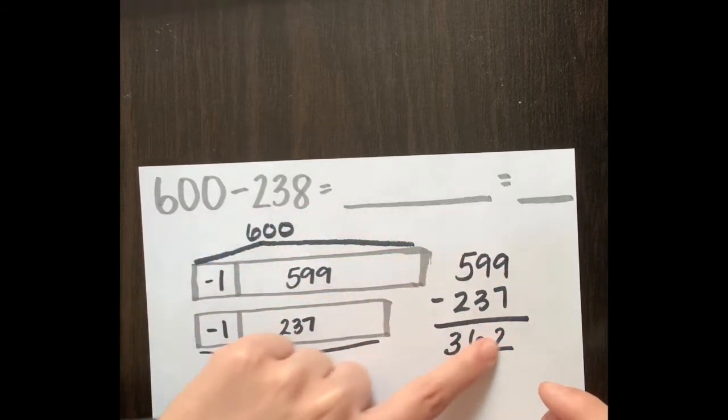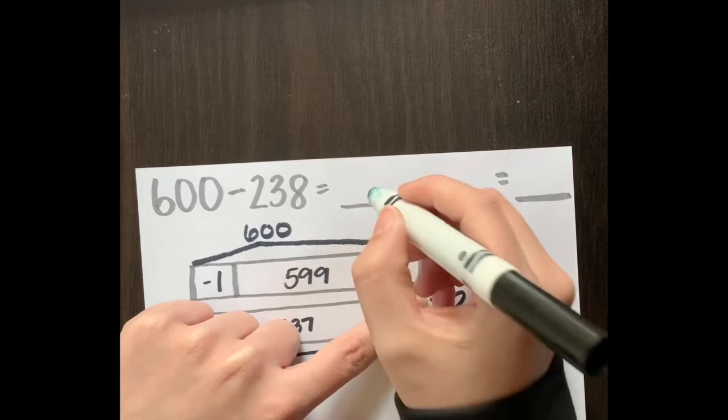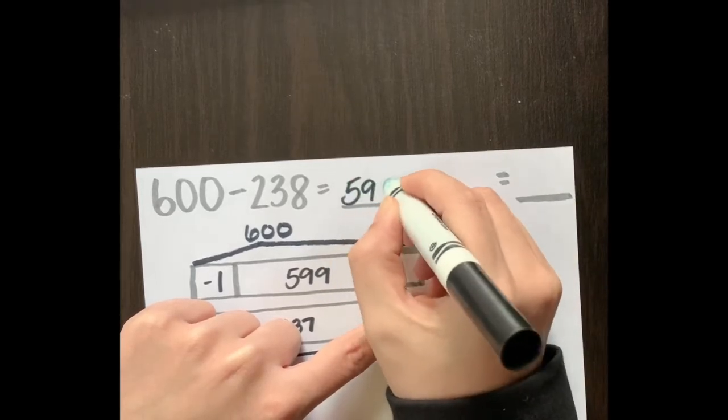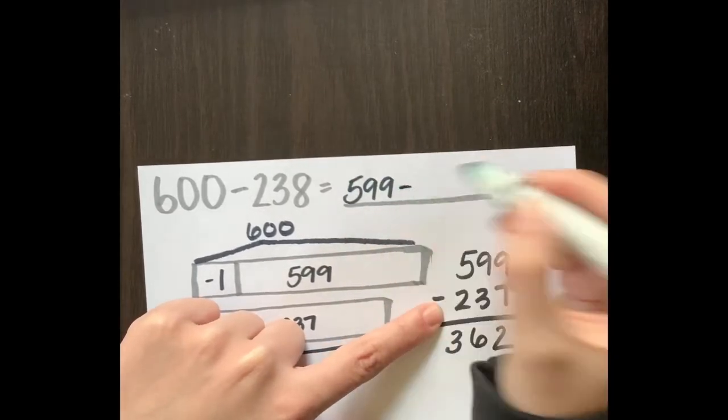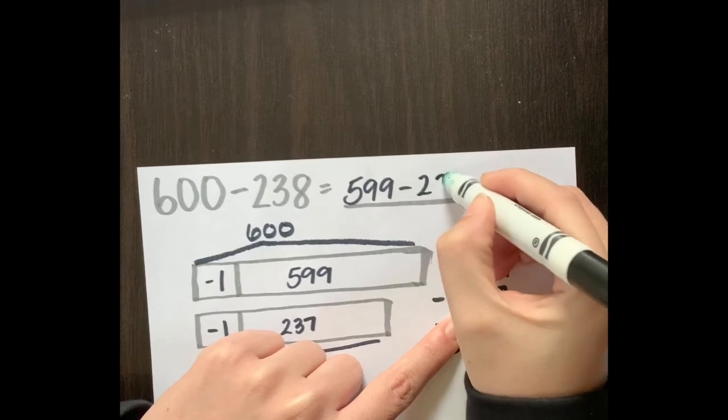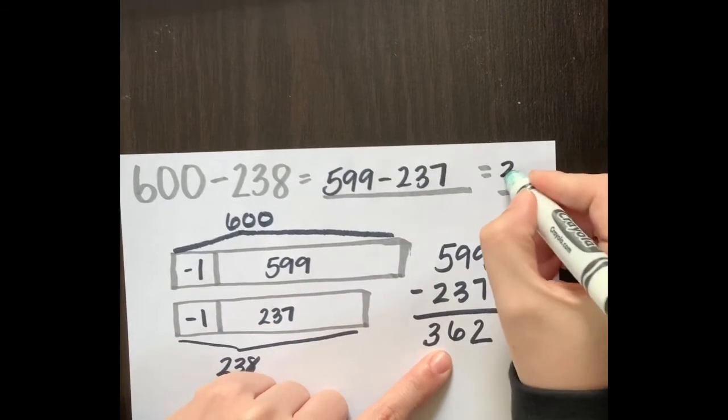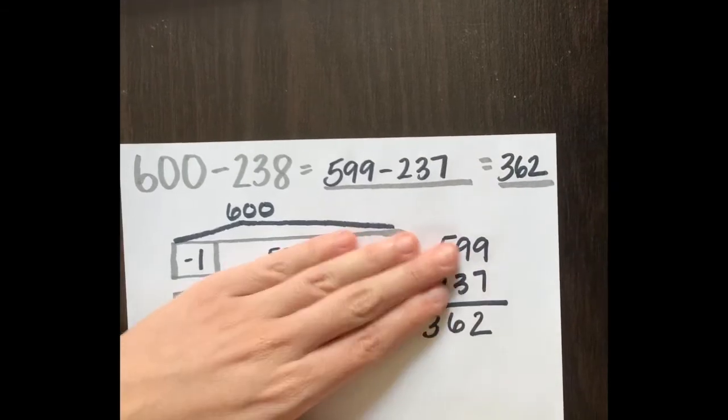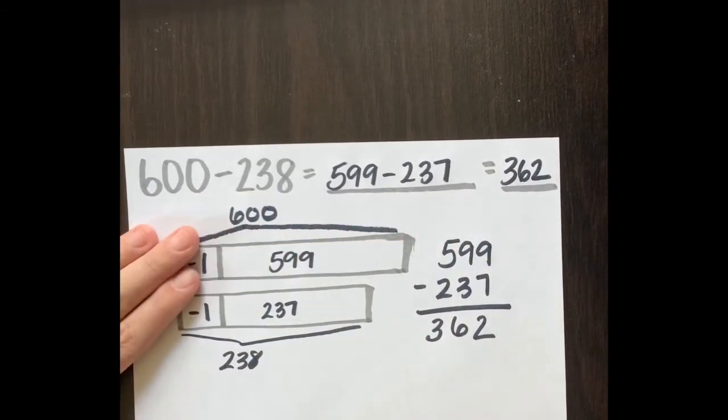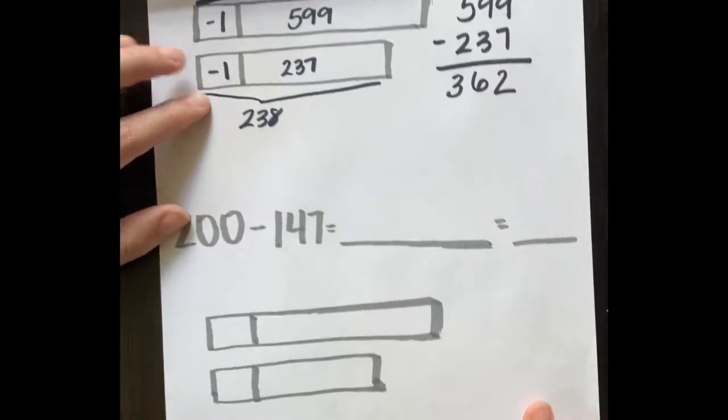So 600 minus 238 equals 599 minus 237, which equals 362. Perfect, we did great job. One more to go before you get to try these on your own.